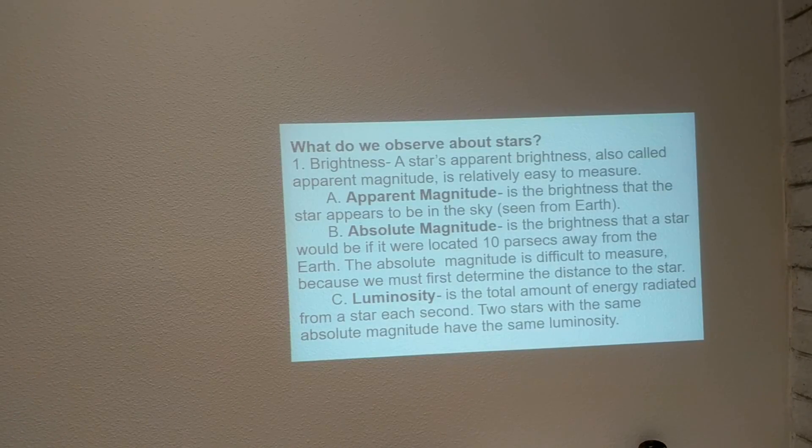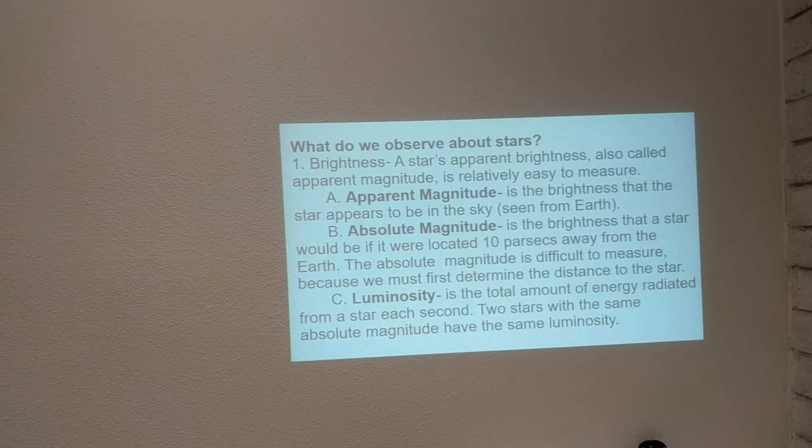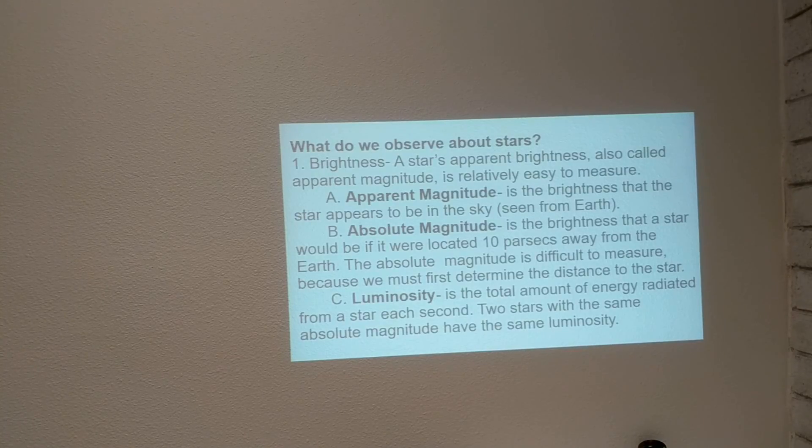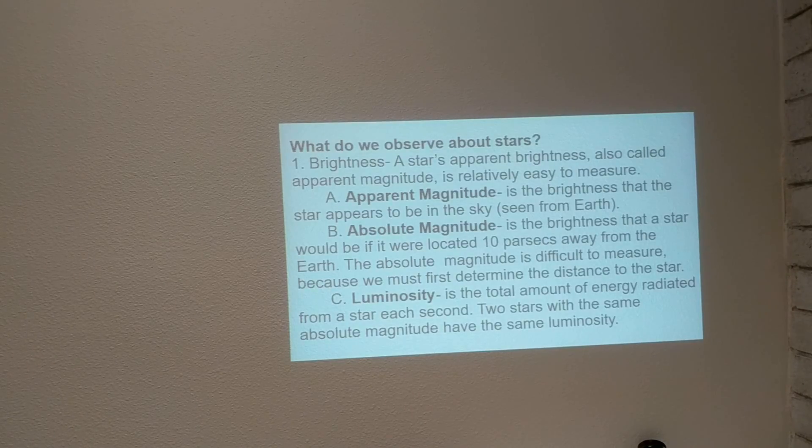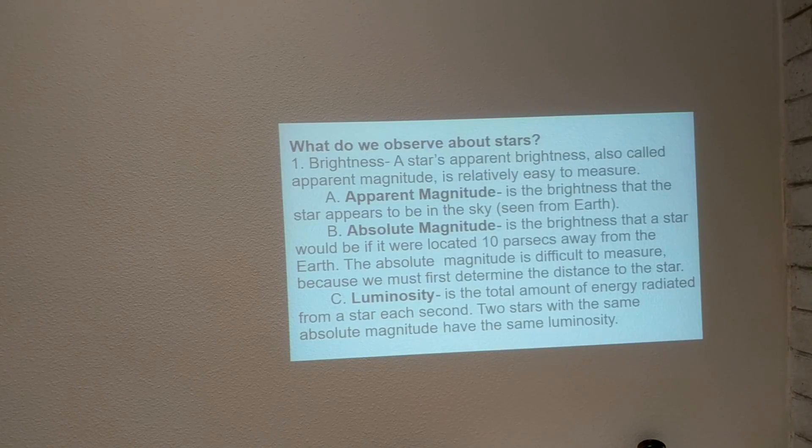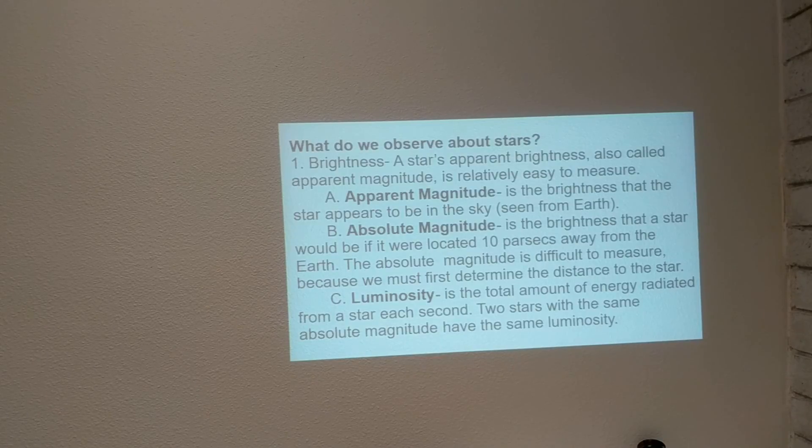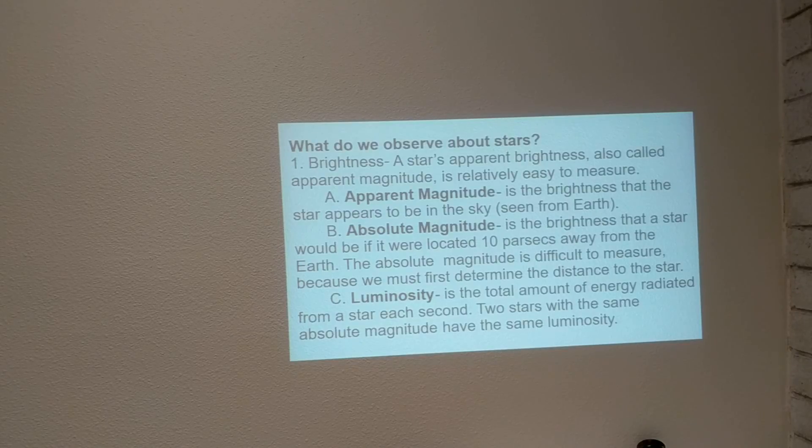The most important term and concept to understand here is luminosity. Luminosity is an energy per second. It's the total amount of energy radiated from a star each second. Two stars with the same absolute magnitude have the same luminosity. Luminosity is the most physically related to the star as it's the total amount of energy leaving that star every second. So that's the most important description of the true brightness of the star.